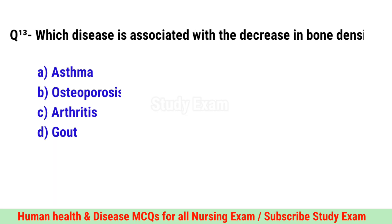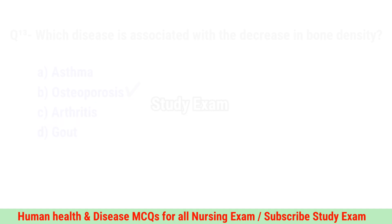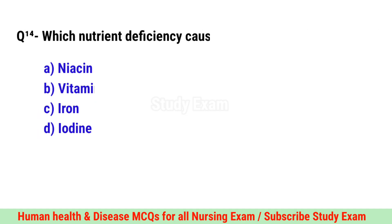Question No. 13. Which disease is associated with the decrease in bone density? Correct option is B. Asthma.